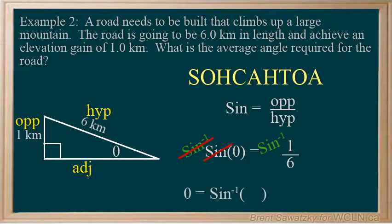And on the right, we have the inverse sine of 1 over 6. Theta is 9.6 degrees. We could say that the angle of inclination of the road is 9.6 degrees.